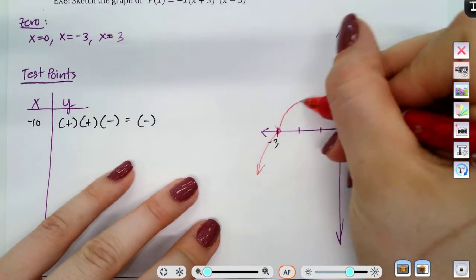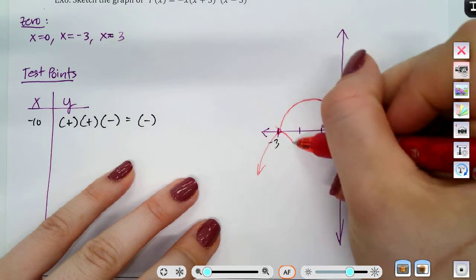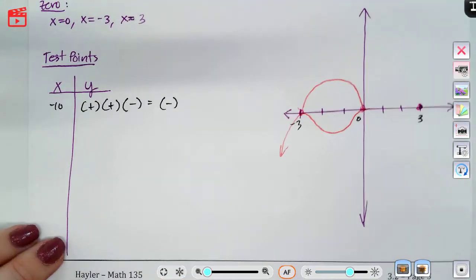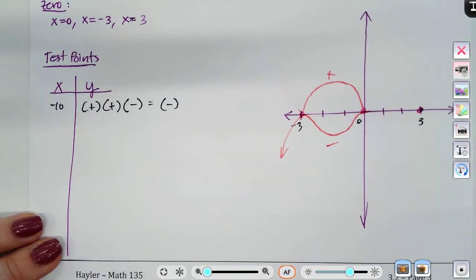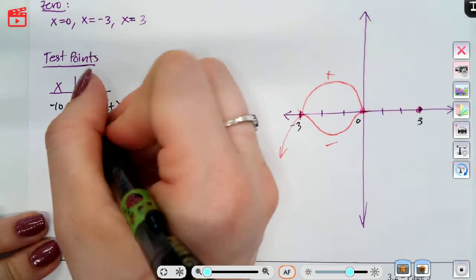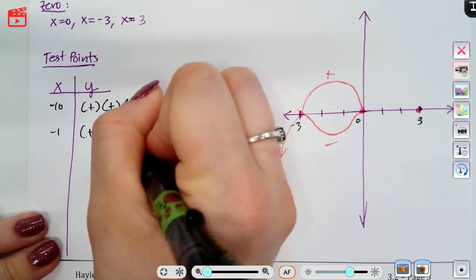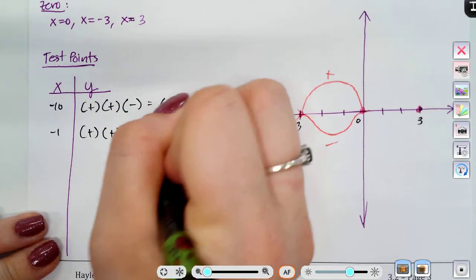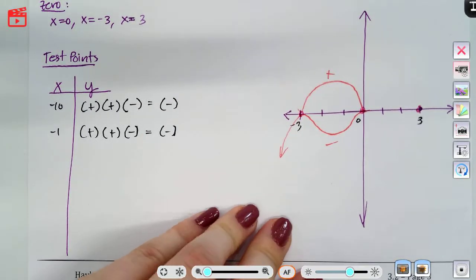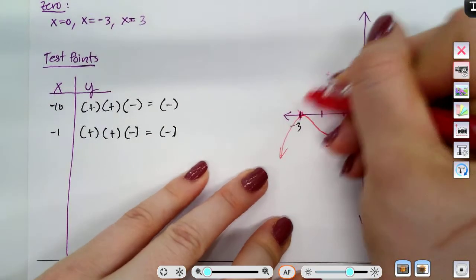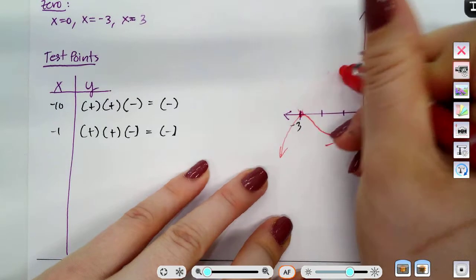Okay, next one. Above or below. Okay. I'll pick the test point negative one. Plugging that in, that's going to be positive, positive, negative. Same thing. We'll end up with a negative sign. So, that means the bottom one. The negative value is where it's going to be.